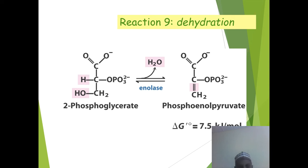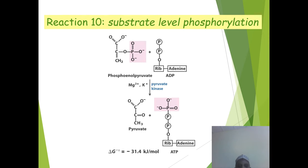Reaction 9: 2-phosphoglycerate is converted by the enzyme enolase, with a delta G standard of +7.5 kJ per mole. Reaction 10 is substrate-level phosphorylation: phosphoenolpyruvate plus ADP gives pyruvate plus ATP, producing 2 moles of ATP. The delta G standard is minus 31.4 kJ per mole.